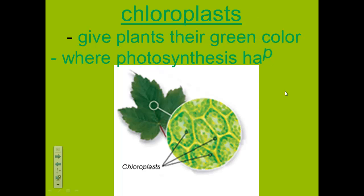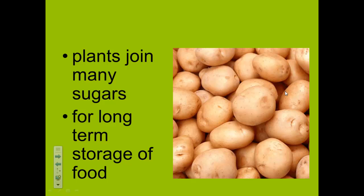Chloroplasts are the parts of the plant cells that give plants their green color, and this is where photosynthesis happens. When photosynthesis happens, sugar is moved to all the cells of the plant, including the cells in the underground roots. The plant's cells do not always use the sugar immediately. The plant will store some of the sugar to use at night. For long-term storage, plants join many sugars to form a chemical called starch.